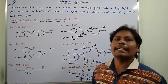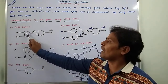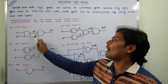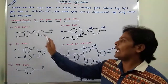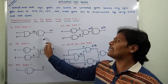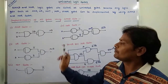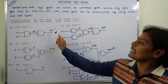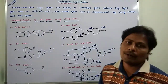First one is AND gate. So A and B are applied to the NAND gate, then we are getting the output AB whole bar. This AB whole bar can be again applied to the NAND gate, so then we are getting the output AB. AB is the output of AND gate.